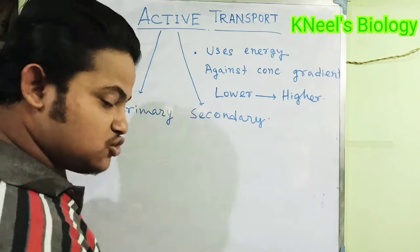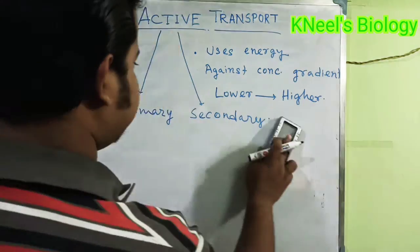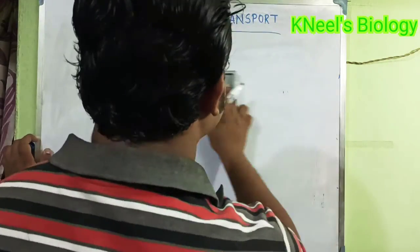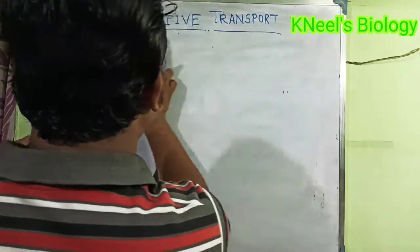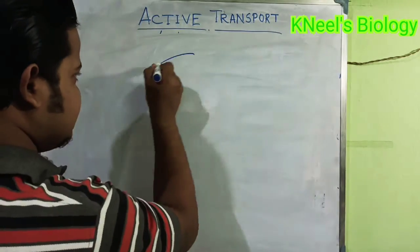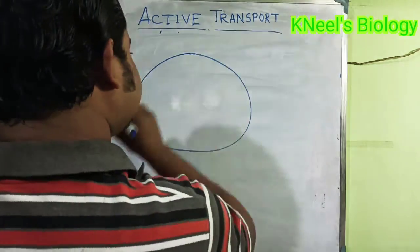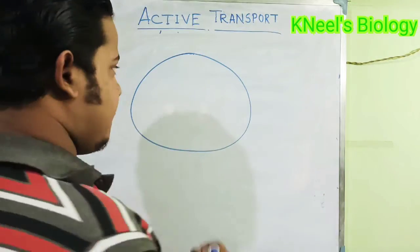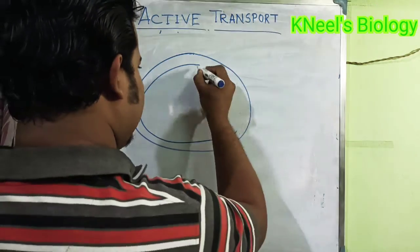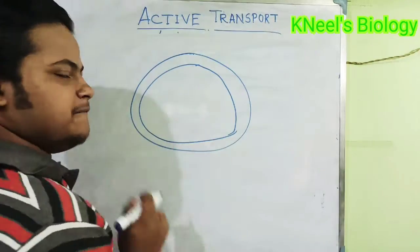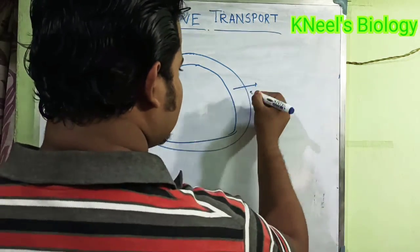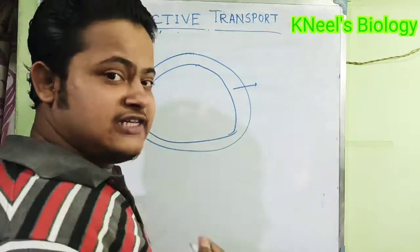Let's draw a cell to illustrate this. This is a cell, and this is a plasma membrane. If I zoom in here on the plasma membrane, we can examine how transport works across it.